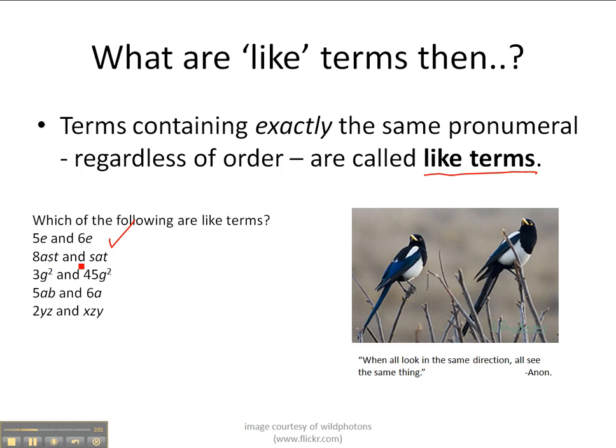8ast and sat. Now they don't have the same coefficient. 8 is the coefficient here and this has got an imaginary 1 in front of it. The pronumerals ast and sat, well they are exactly the same pronumeral, they're just in a different order. So this is also a like term.